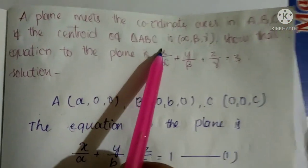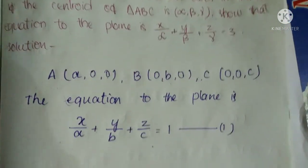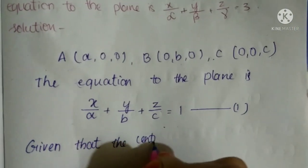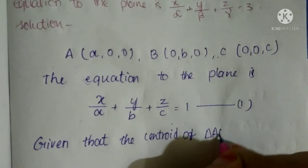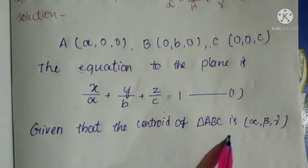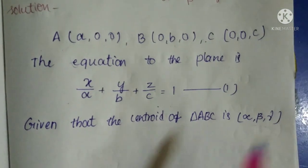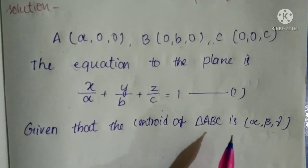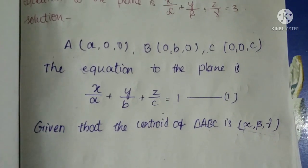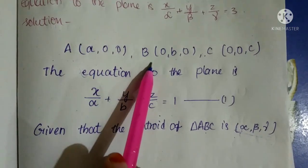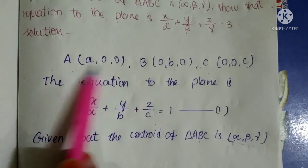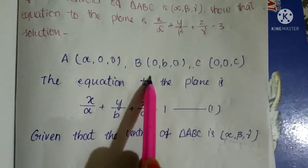Given that the centroid of triangle ABC is (α, β, γ). The coordinates of A, B, C on the axes are A=(a,0,0), B=(0,b,0), C=(0,0,c). The centroid formula gives: (a+0+0)/3, (0+b+0)/3, (0+0+c)/3.